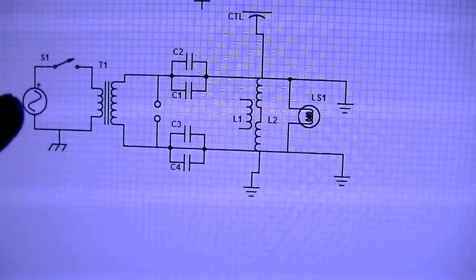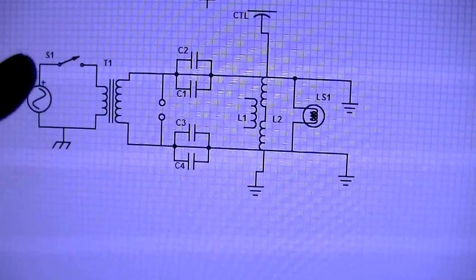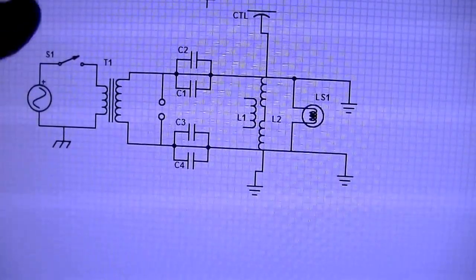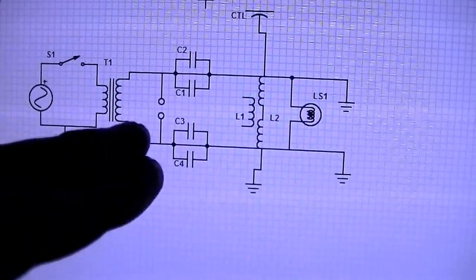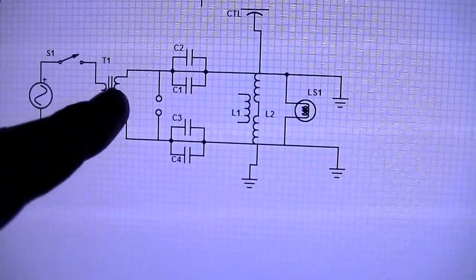Alright, here's the circuit. So you have your mains electricity, switch, chassis grounded, and this is your neon sign transformer, 5kV in this particular instance.